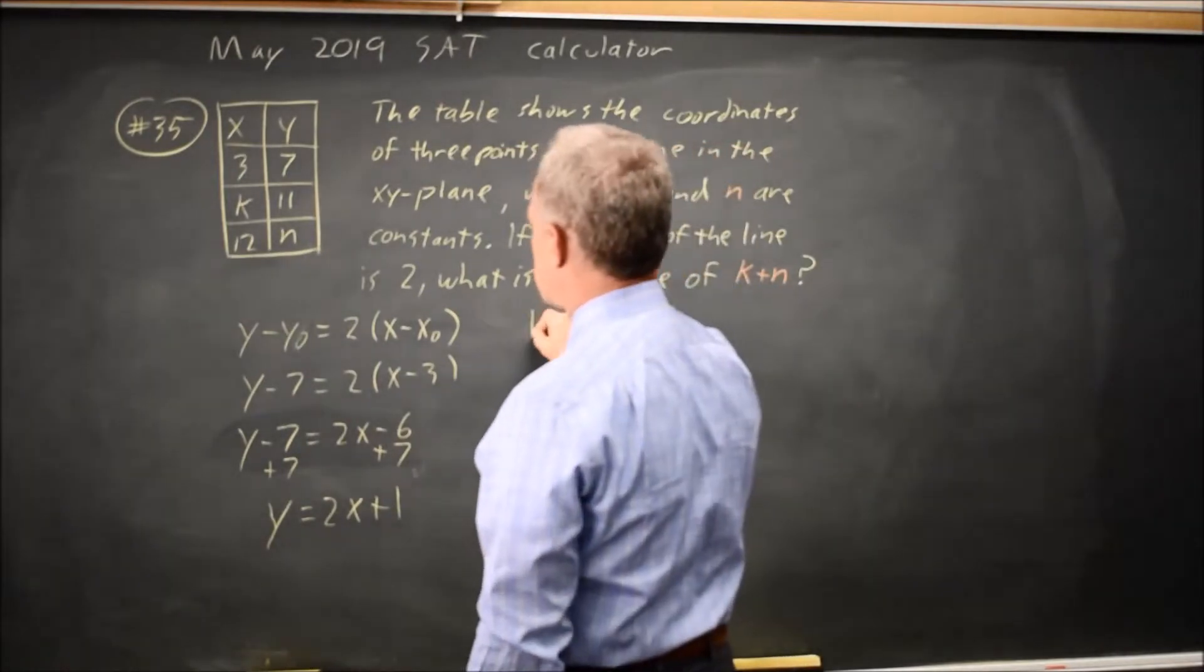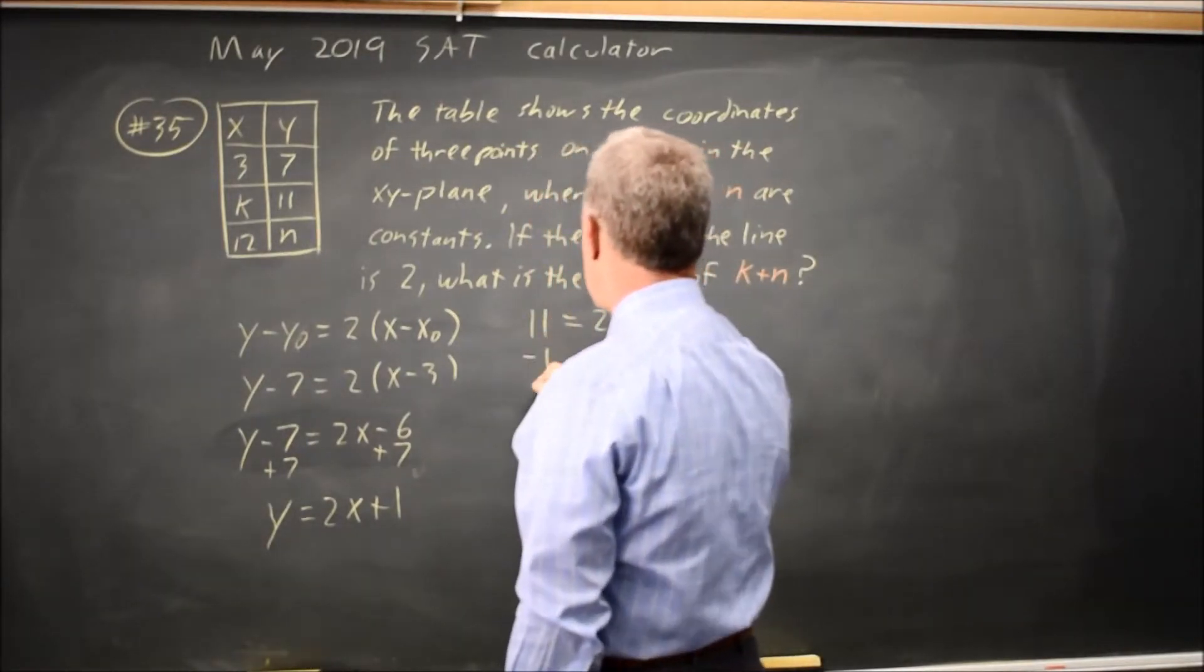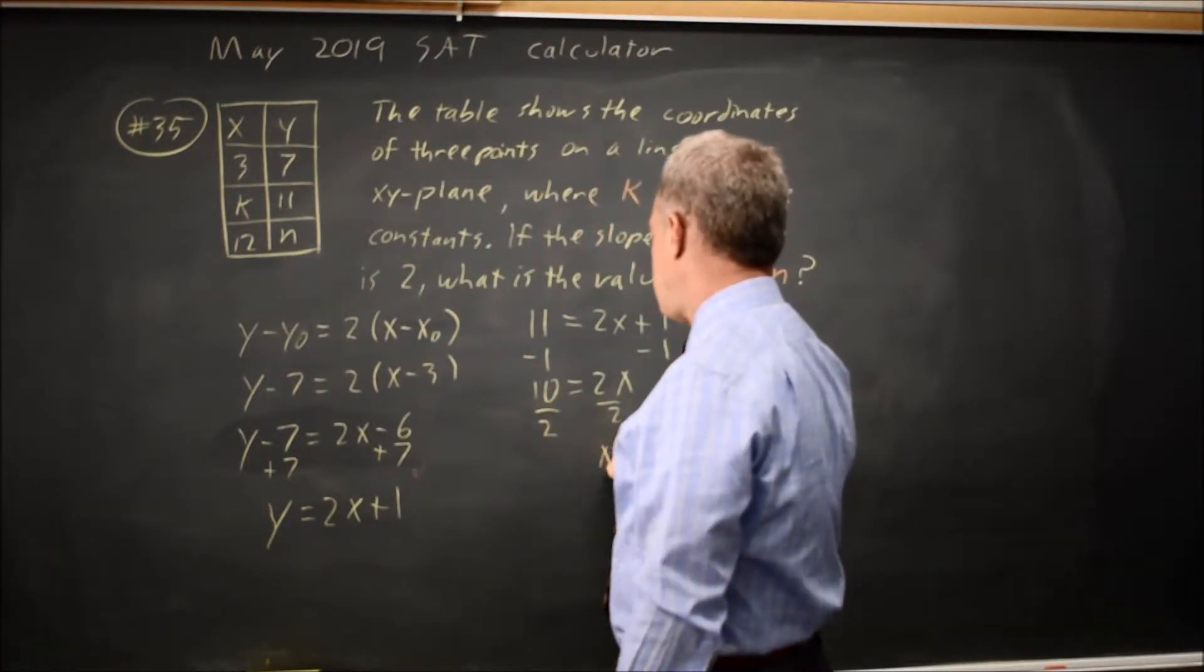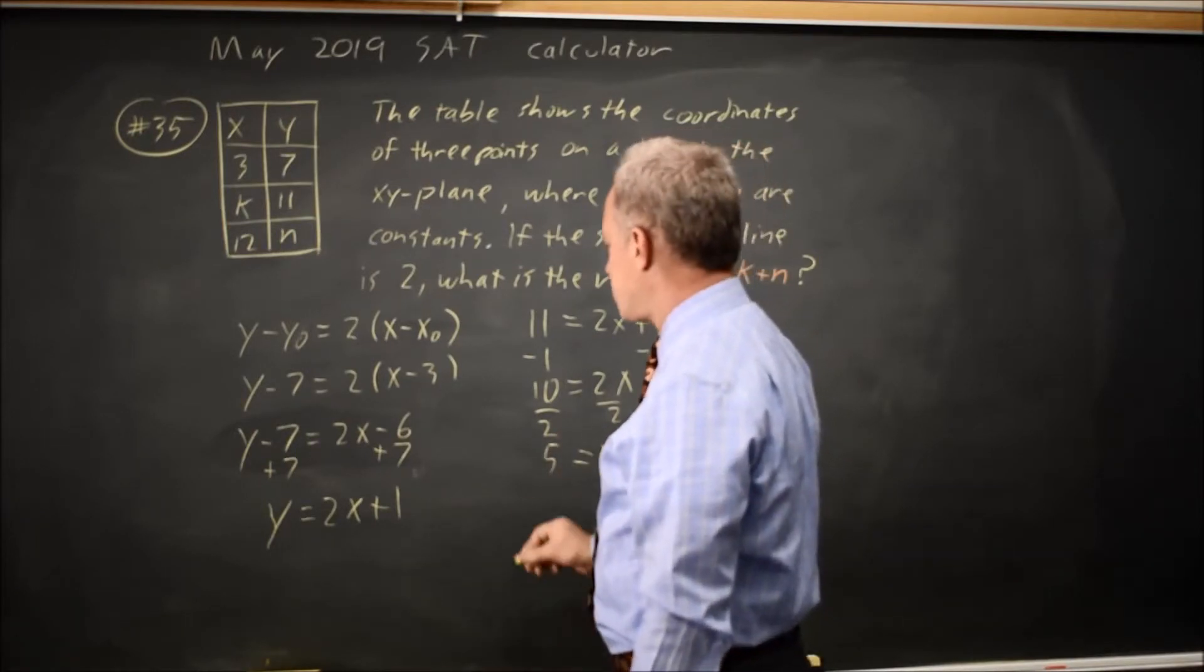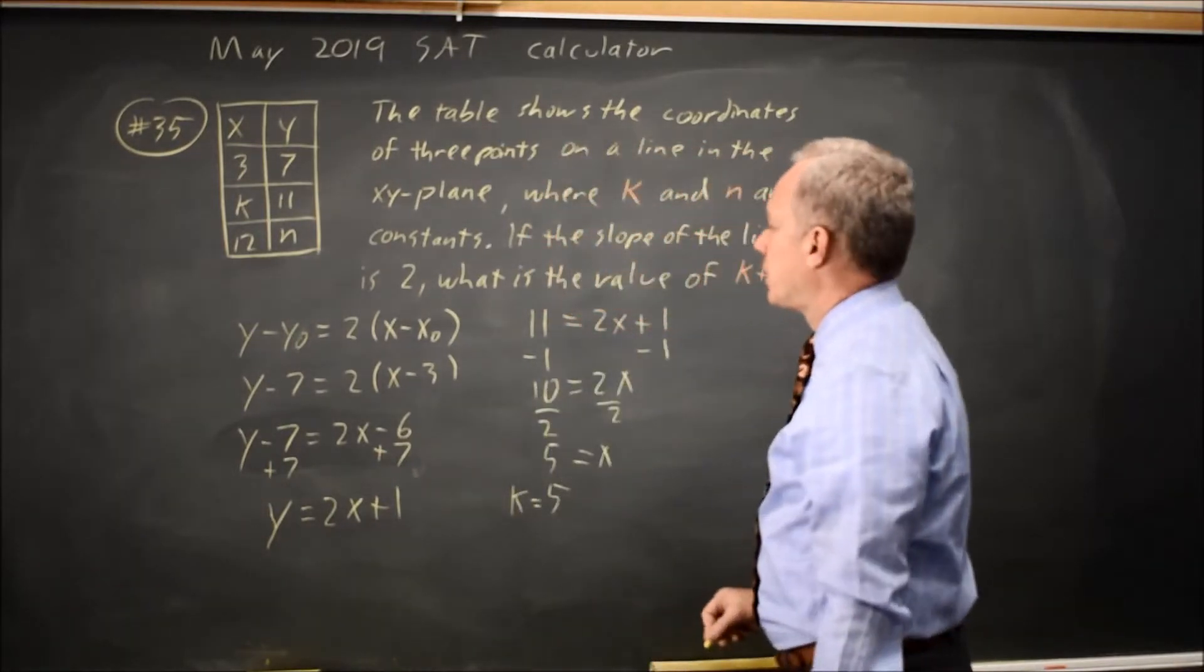When y equals 11, 10 equals 2x divided by 2. x equals 5 when y is 11, so k equals 5.